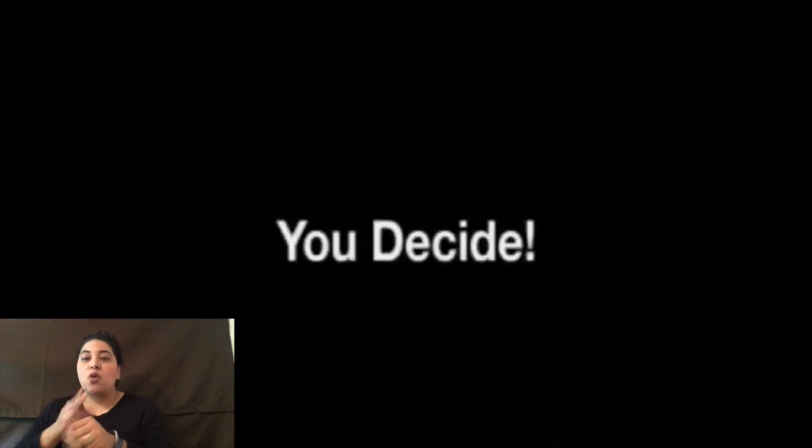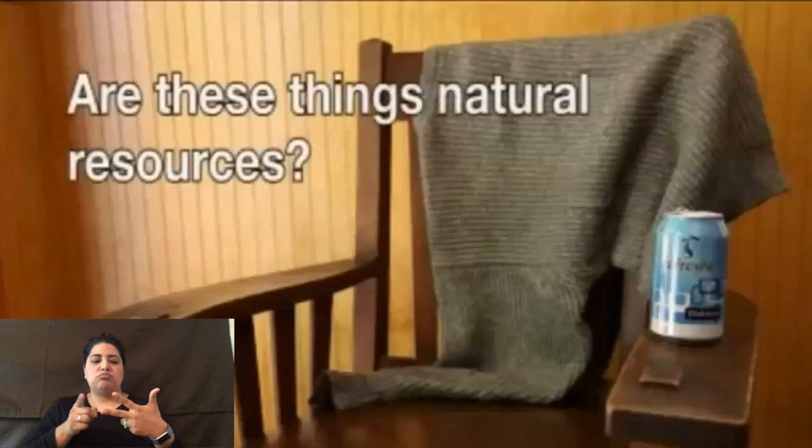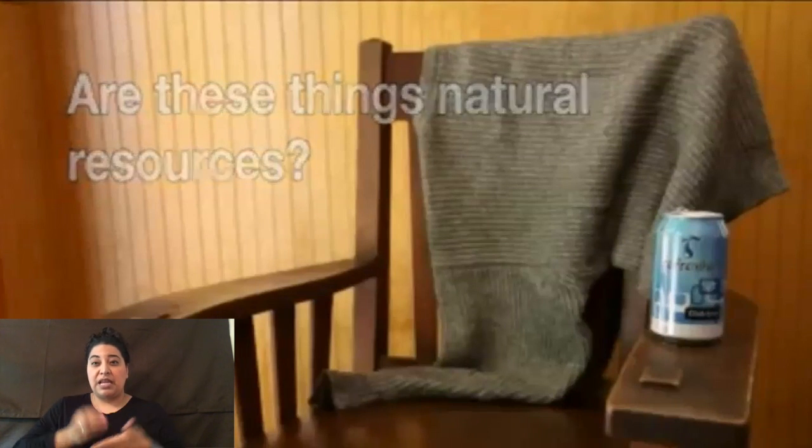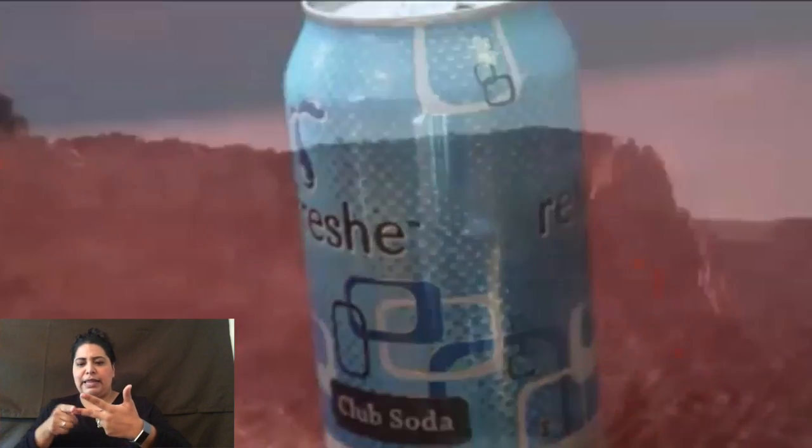You decide: are the following things natural resources — a chair, a sweater, and an aluminum can? You wouldn't see a chair, sweater, or aluminum can naturally occurring in nature, but all these things are made from natural resources. This chair is made from the wood of trees, this sweater is made from the wool of sheep, and this aluminum can is made from aluminum from the earth's surface.